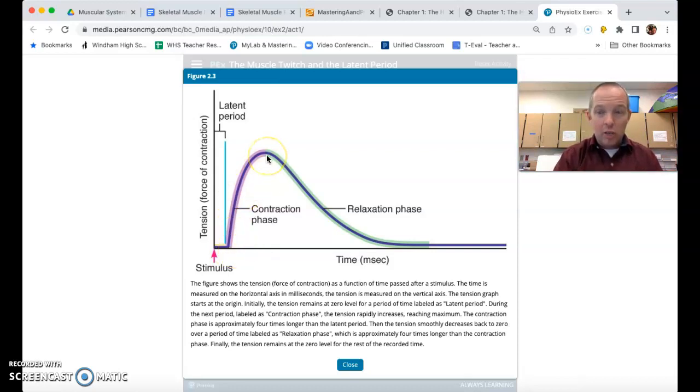Then we have a contraction phase in which force is actually generated as the sarcomeres shorten and a relaxation phase where those bonds are broken, where actin and myosin detach and the sarcomere sort of slides out to its normal length.